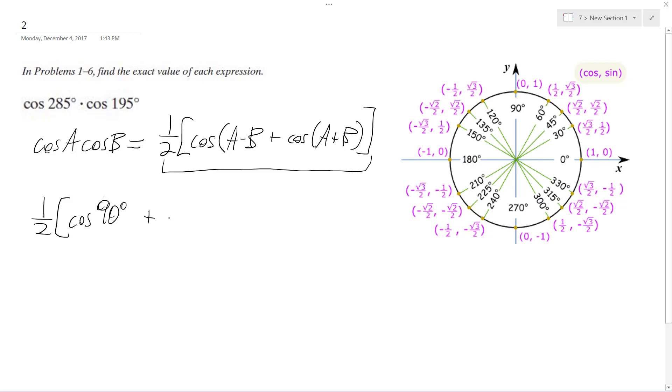and then we have plus the cosine of A plus B, which gives me 480 degrees.